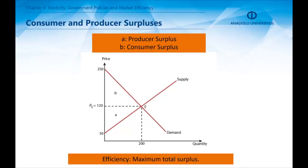The last thing we are going to emphasize is surplus. A surplus for consumers is the difference between what they would pay to buy and what they actually paid. Similarly, a surplus for producers is the difference between the minimum price at which they would produce the good and the price at which they actually sold it.